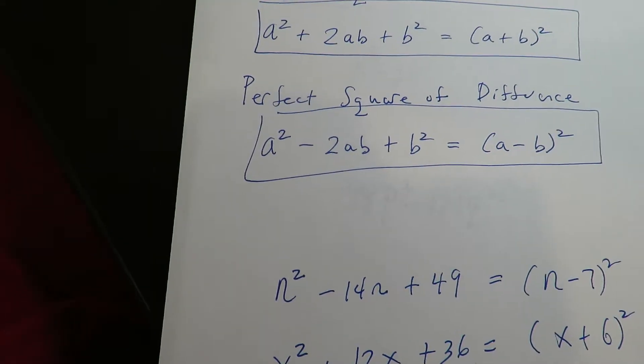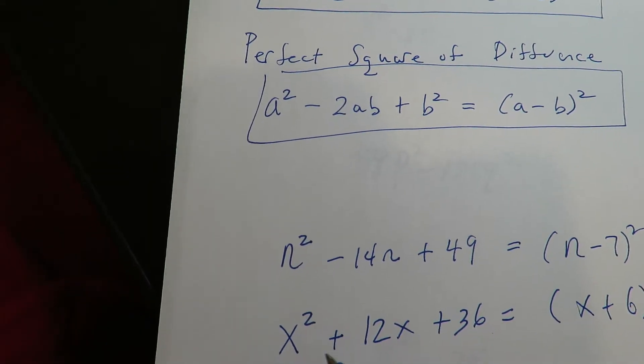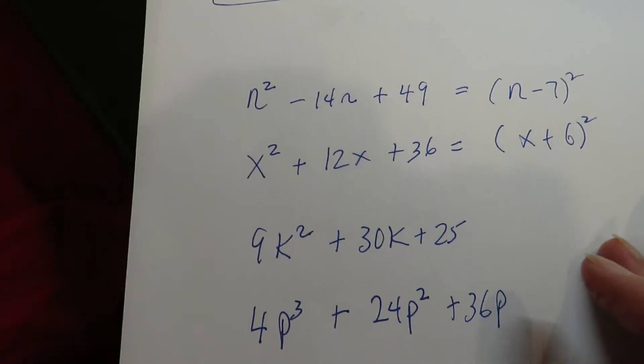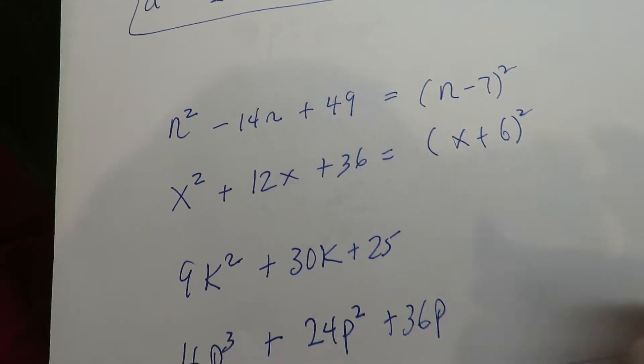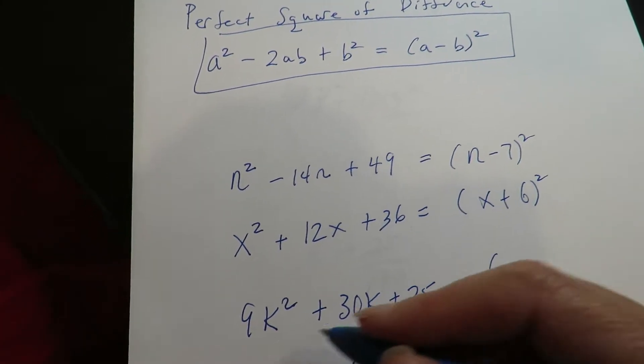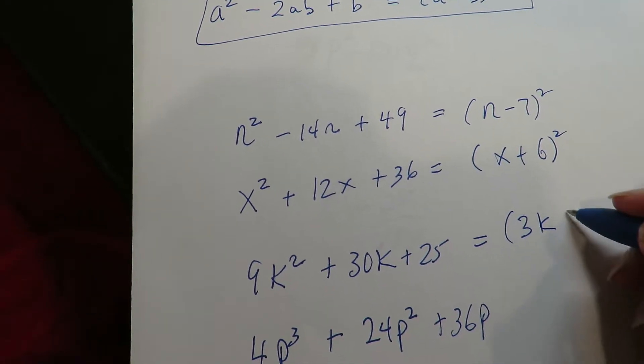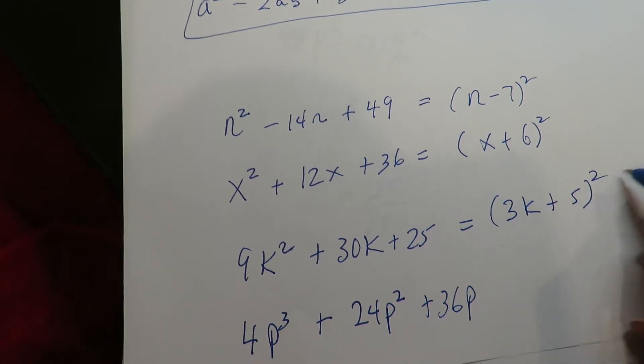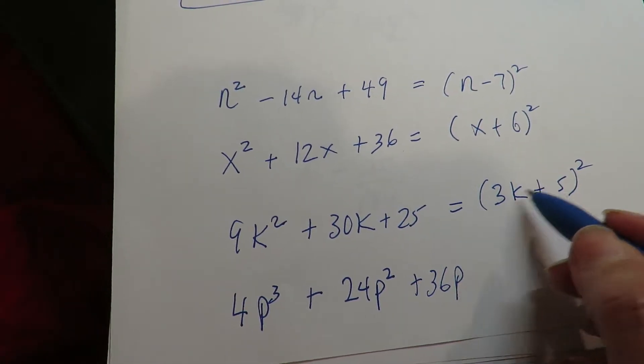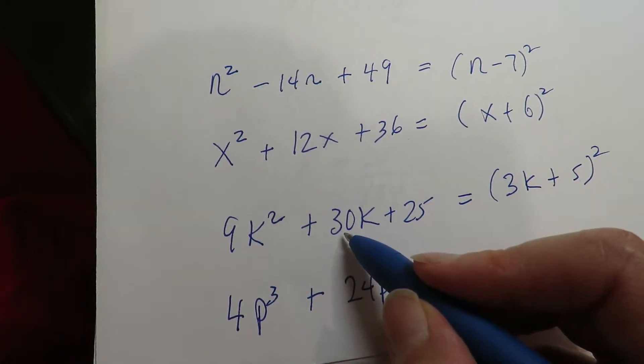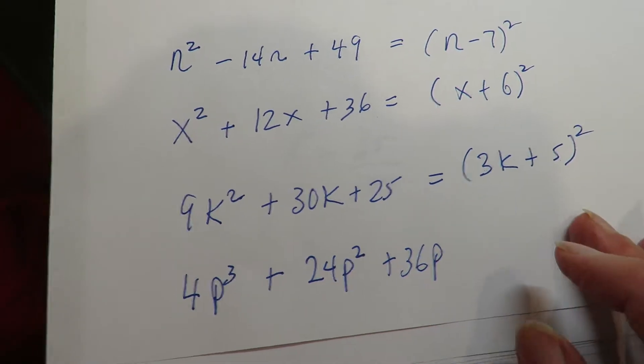And since the leading coefficient is a 1, it's just coming off of the 6 on the end. Here, this one's going to be square root of this is 3k. Square root of this is 5. And then this makes 15. Twice 15 is 30. So it just depends.